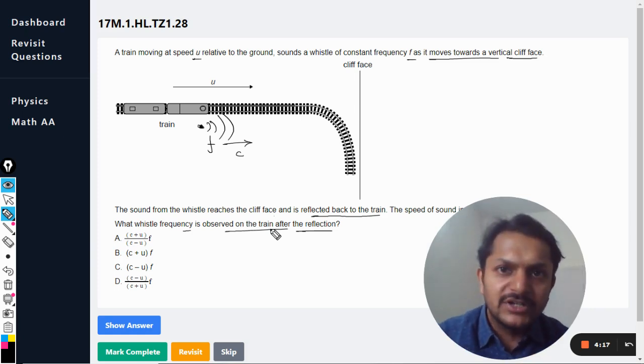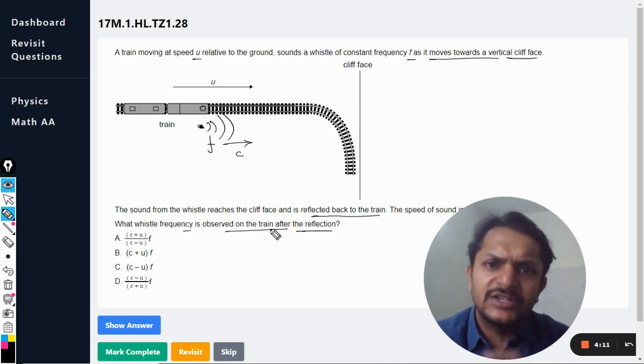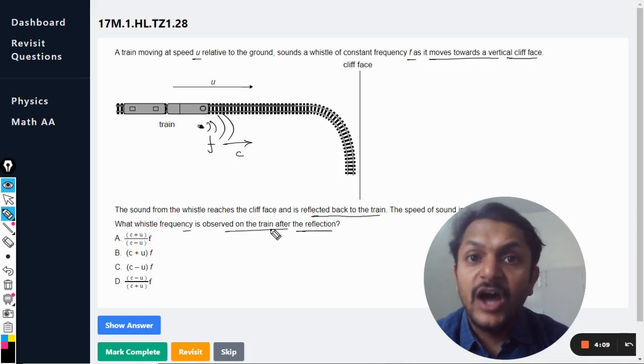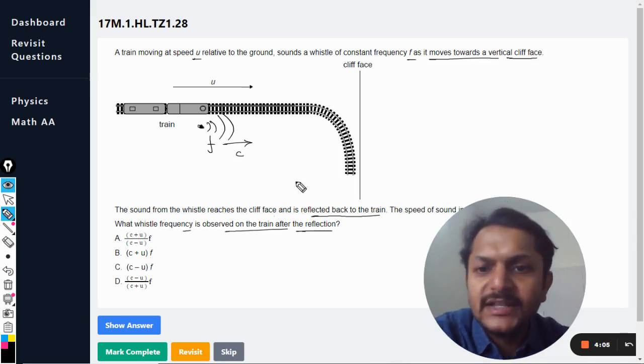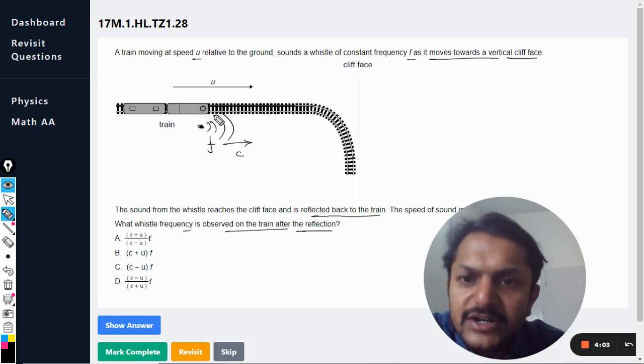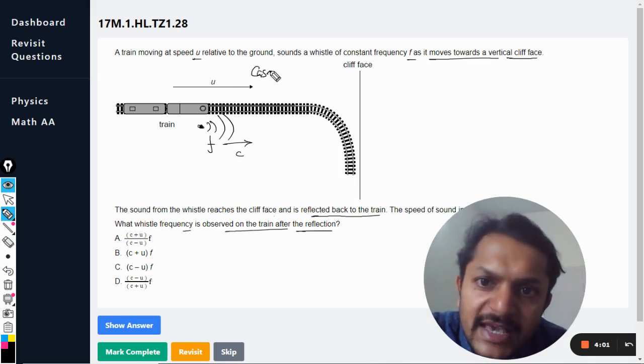This kind of problem is known as train-cliff problem. There are two problems: one is train-cliff problem, another is radar-aircraft problem. So we would be doing that also, and this also. Let us see. So what is happening here is there are two cases.